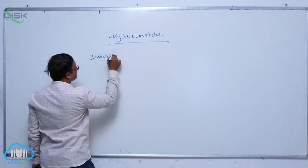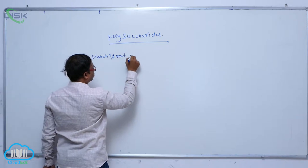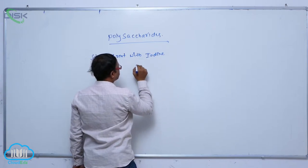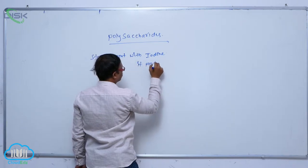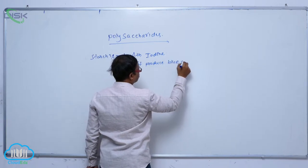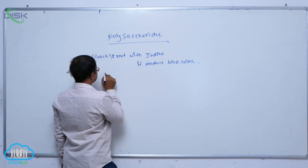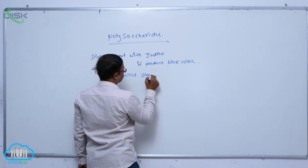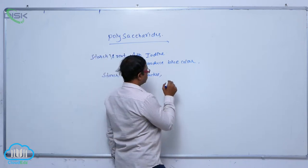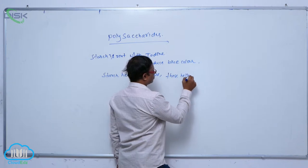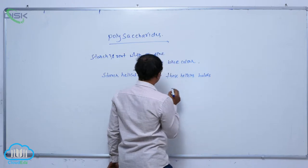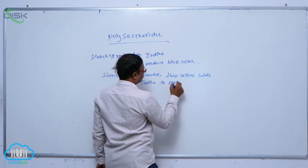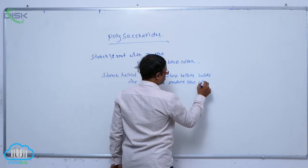Starch reacts with iodine and produces a blue color. This is because starch has a helical structure, and these helicals hold the iodine to produce the blue color.